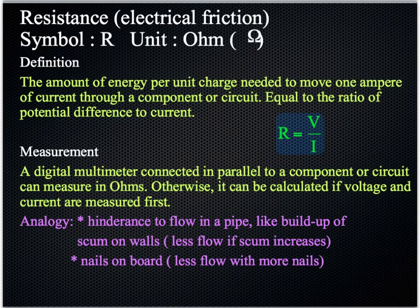The third concept you need to become familiar with is this thing called resistance. It really is a summary way of thinking about it to do with friction inside the wires. Usually copper wires. The symbol is R. The unit is Ohm. The capital Omega, which is the Greek letter for the Ohm symbol. What is it? Well, it's the amount of energy per unit charge needed to move one ampere of current through a component or circuit. It's equal to the ratio of potential difference to current. So this is the equation. The ratio of potential difference divided by current.